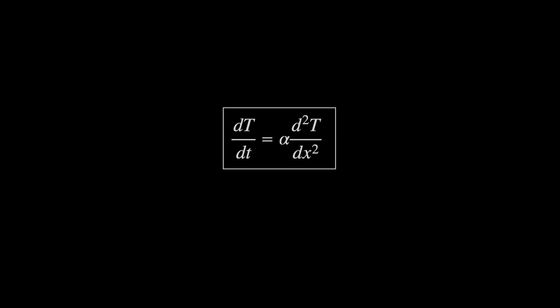Solving the heat equation means finding a function T of the spatial variables x, y and z if we're working in 3D and time t that you can plug into both sides and the equality holds. But this is a partial differential equation meaning it has derivatives in more than one variable and these are notoriously hard to solve.